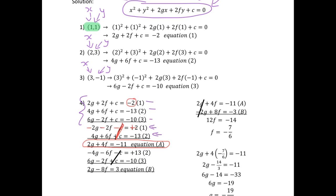Now taking equations 2 and 3, we change all signs along equation 2 — plus 4g becomes minus 4g, plus 6f becomes minus 6f, plus c becomes minus c, and minus 13 becomes plus 13. Adding these two equations, the c terms cancel. We have minus 4g plus 6g equals 2g, minus 6f minus 2f equals minus 8f, and plus 13 minus 10 equals 3, giving us equation b: 2g minus 8f equals 3.